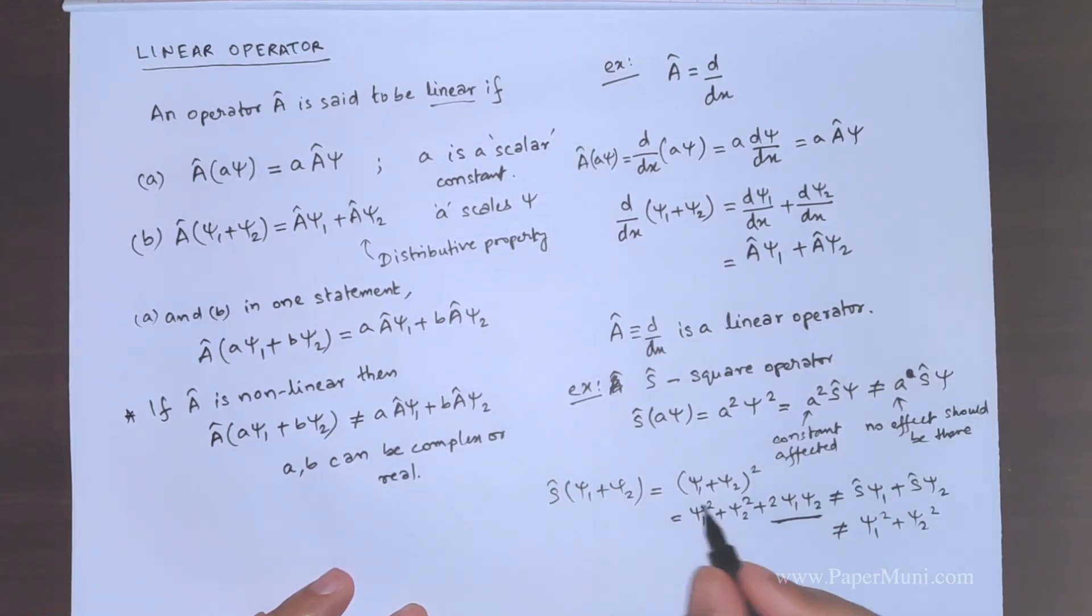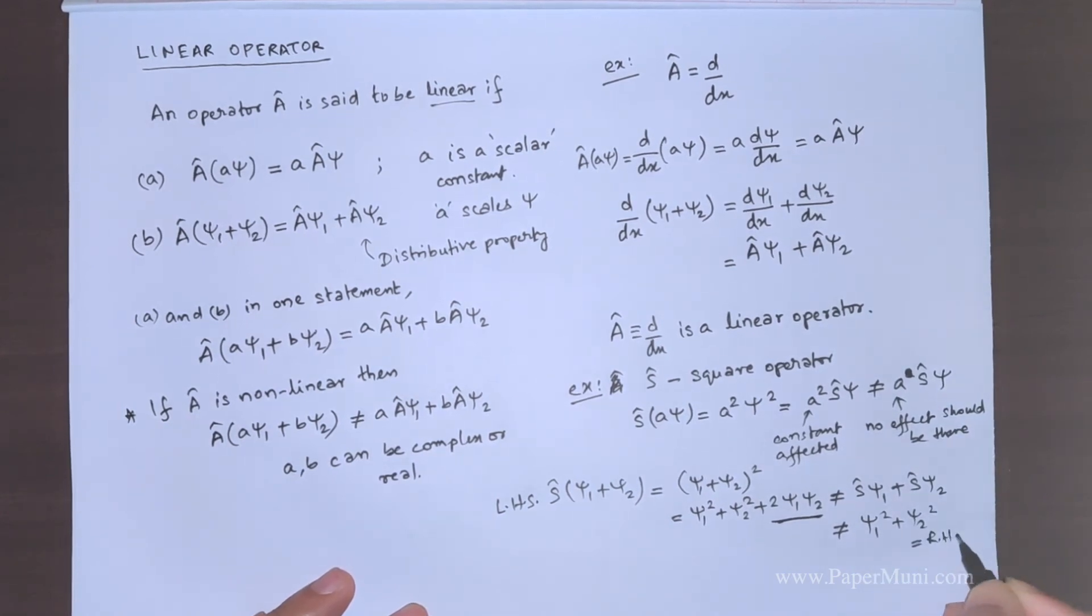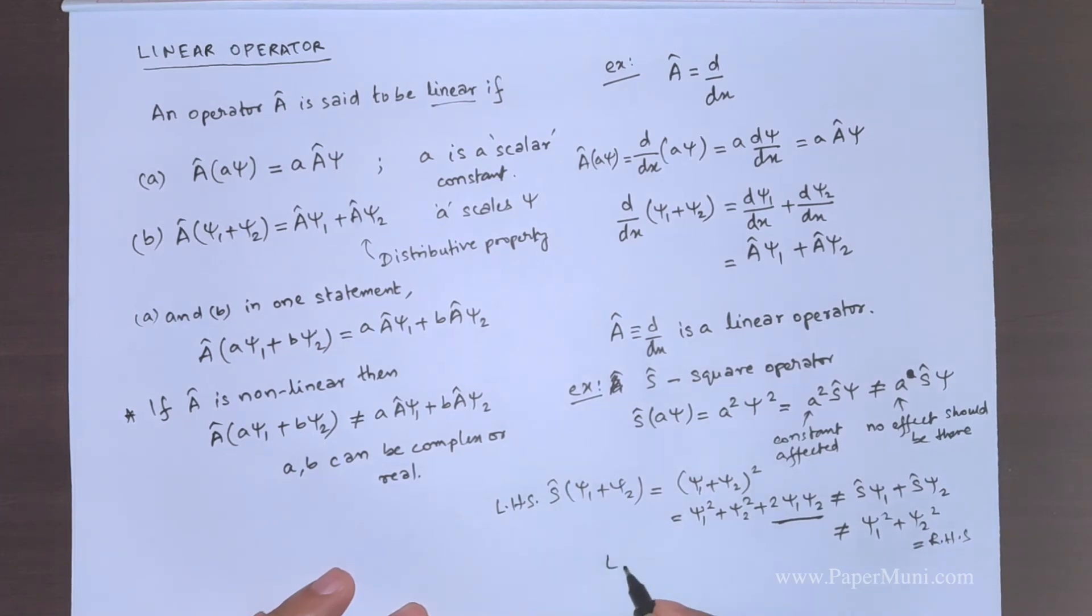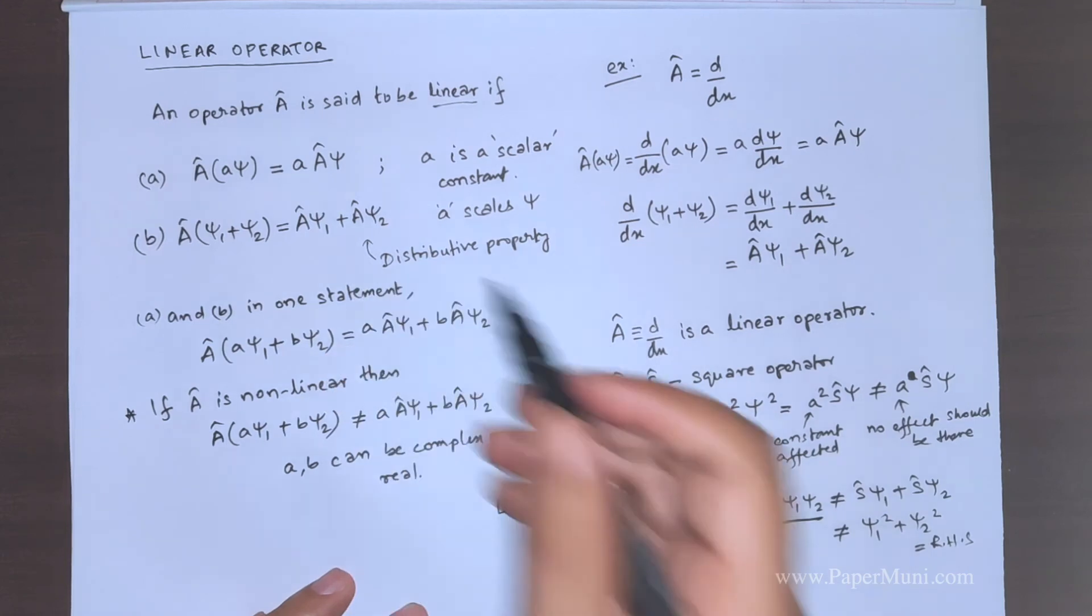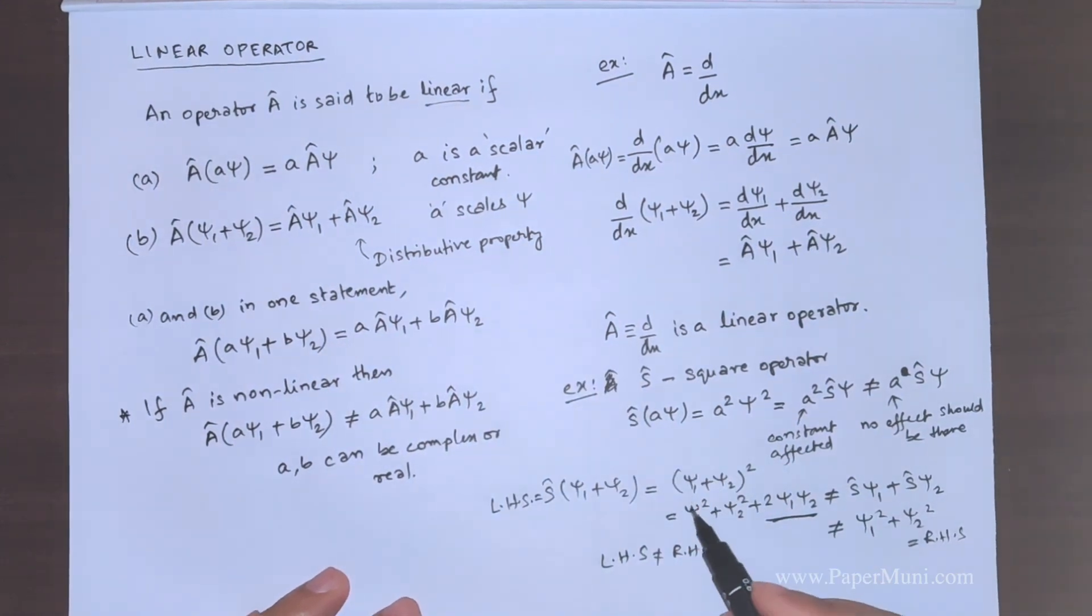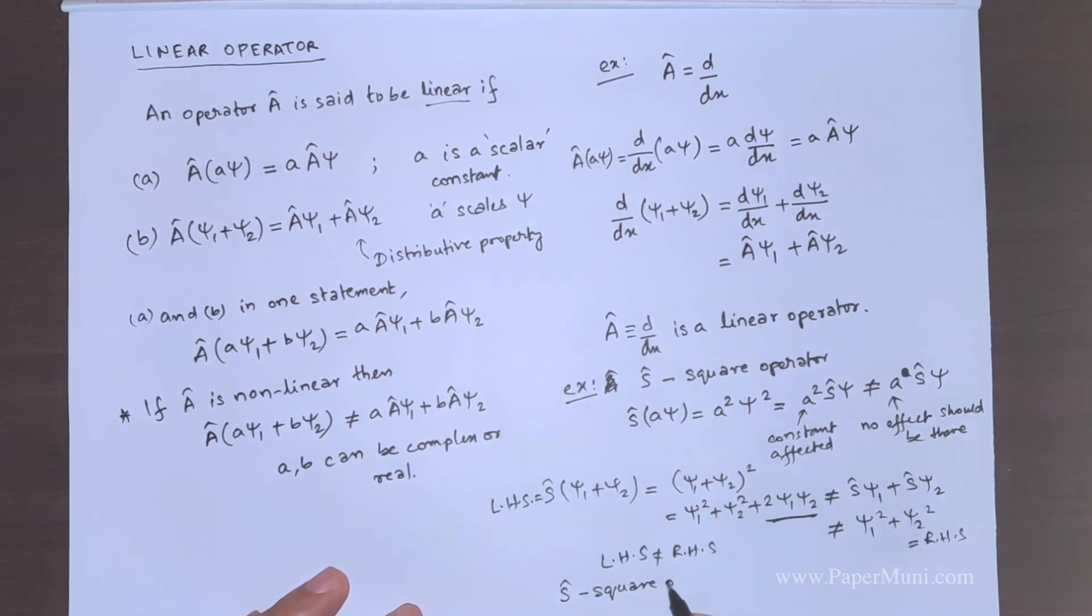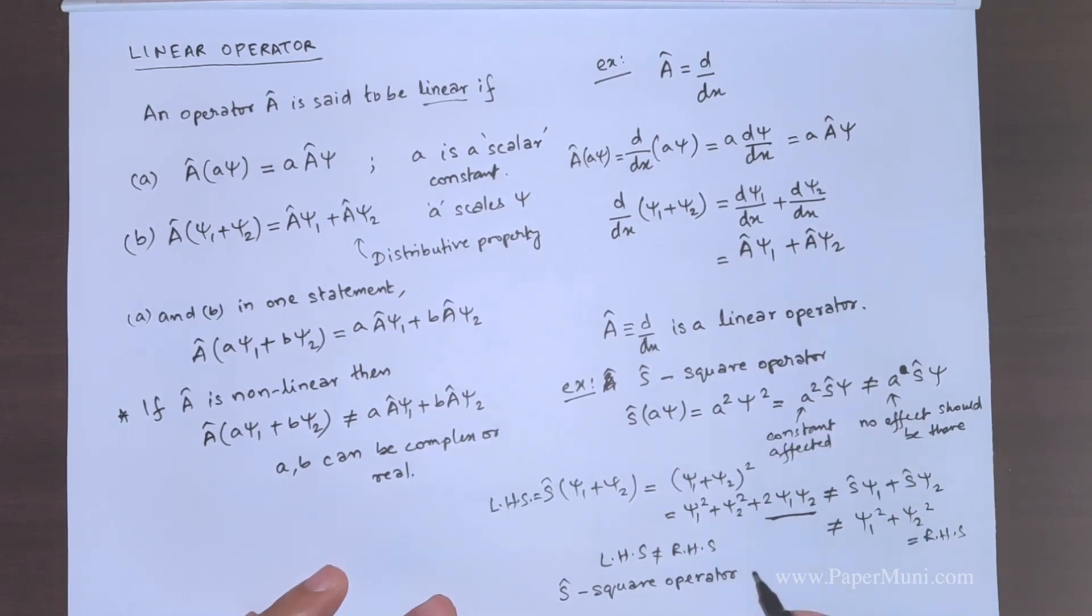We can see that this is an extra term. If we see in the LHS side. This was the LHS. And the right hand side was this one. This is RHS. We can see that this is RHS is not equal to LHS. LHS is not equal to RHS. This condition B condition is not followed here. Both A and B are not followed. That means that the square operator S is not a linear operator.